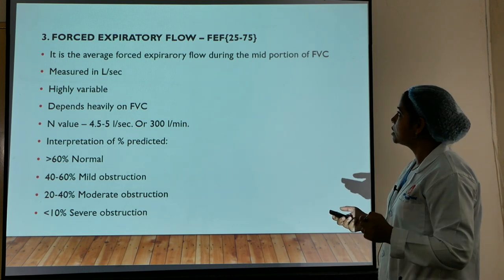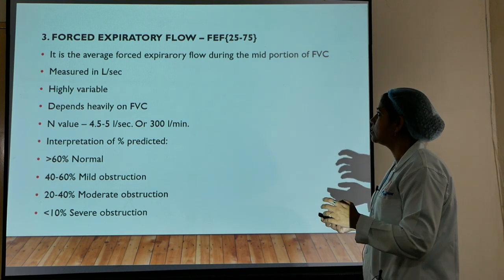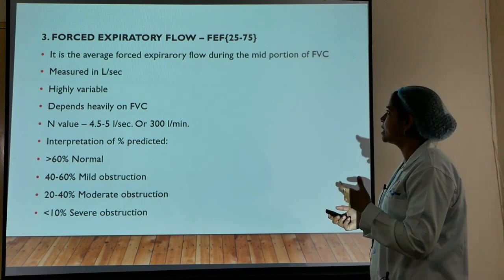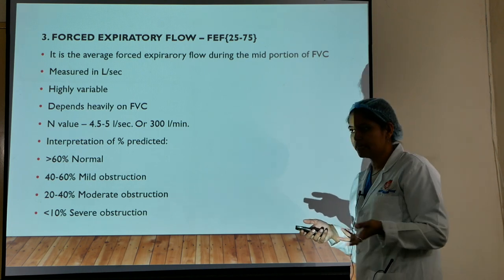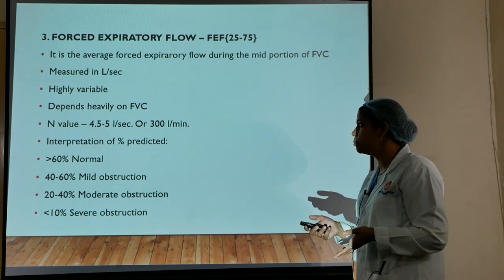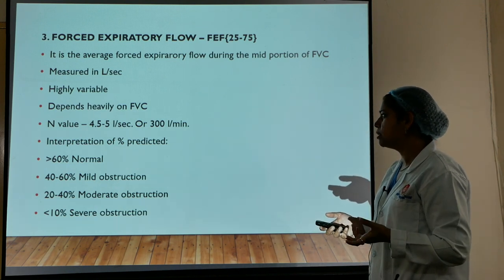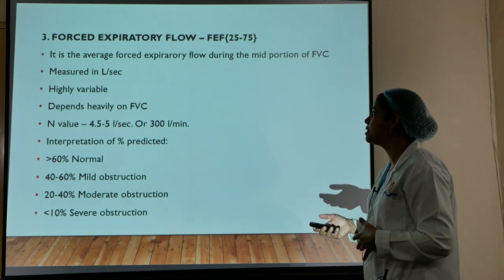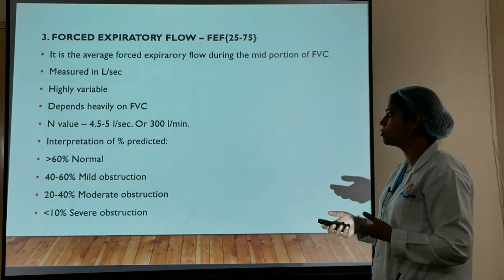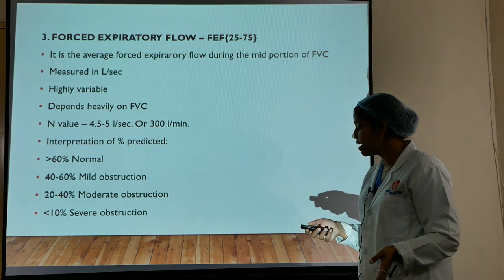Forced expiratory flow (FEF) is the average forced expiratory flow during the mid-portion of the forced vital capacity, measured in litres per second. It is highly variable and depends heavily on FVC. Normal value ranges between 4.5 to 5 litres per second, or approximately 300 litres per minute. Interpretation as percentage predicted: greater than 60% is normal, 40–60% is mild, 20–40% is moderate, and less than 10% is severe.